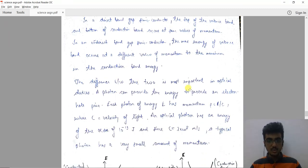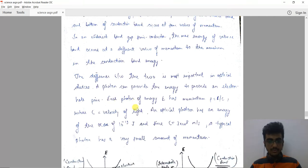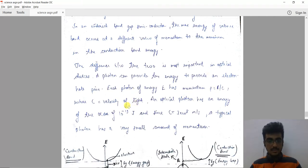The difference between the two is most important in optical devices. A photon can provide the energy to produce an electron-hole pair. Each photon of energy E has momentum given by E/c, where c is the velocity of light.